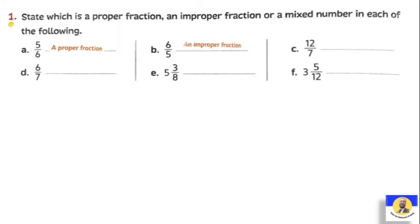So six over five is an improper fraction. Letter C: twelve over seven. Is this fraction proper or improper? Since the number on top is greater than the number on the bottom, it will be improper. The next one, letter D: six over seven. Since the number on top is smaller than the number on the bottom, it will be a proper fraction.